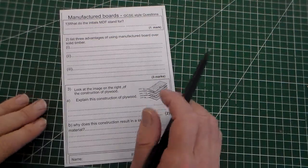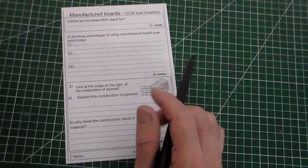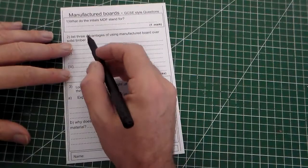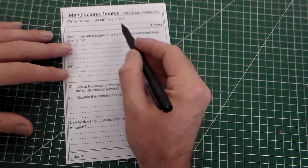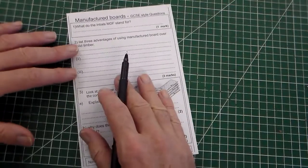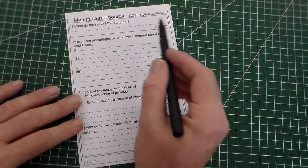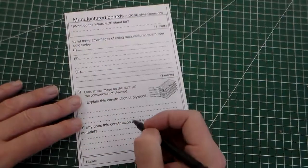Hello, welcome to Mr. Ridley's Design and Technology and welcome to another learning check. These are GCSE style questions and this one's about manufactured boards. We've got a 1 mark, a 3 mark and a 4 mark.